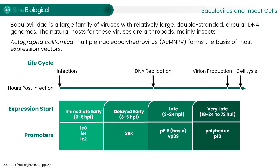Firstly, let's take a closer look at baculovirus. Baculovirus is a large family of viruses with large double-stranded circular DNA genomes. The main hosts of these viruses are insects. The most famous baculovirus is AcMNPV. This virus is harmless to humans, making it a suitable vector for recombinant expression. In fact, most expression vectors we use in the BEVS are engineered based on the AcMNPV genome.